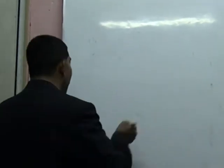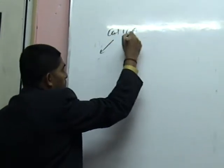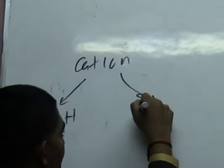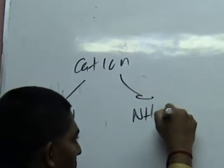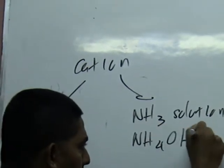Now, one of the most important tests for identifying cation would be the sodium hydroxide test and ammonia solution test. This is one of the most important tests which almost every year comes out in SPM examination.